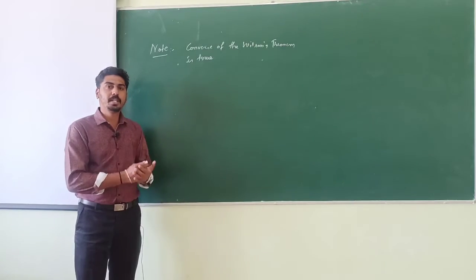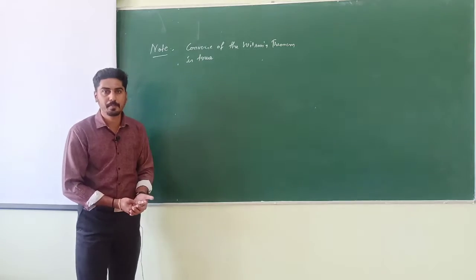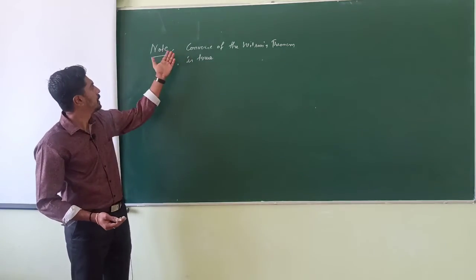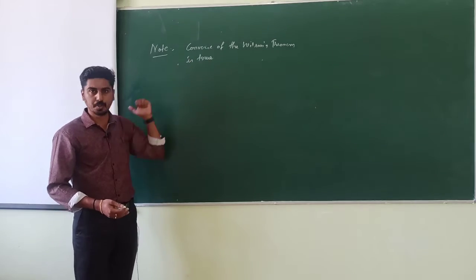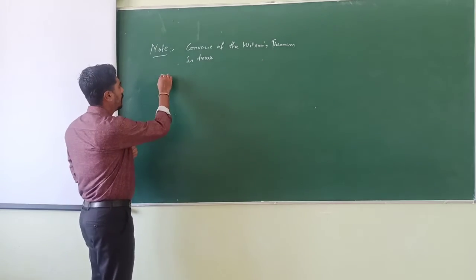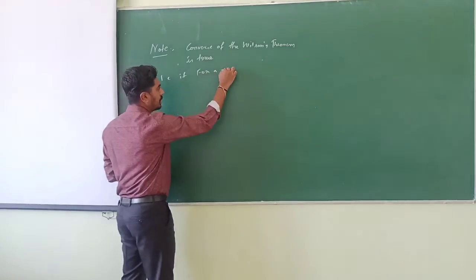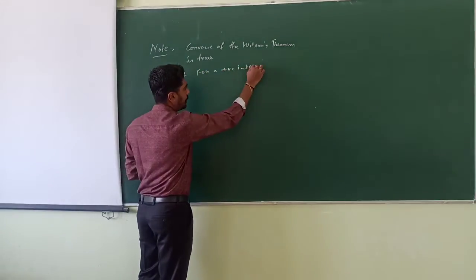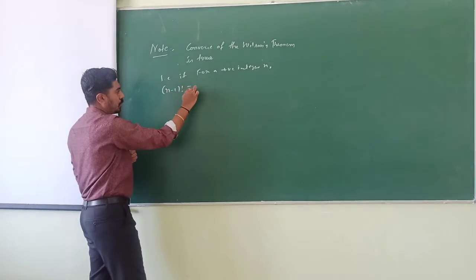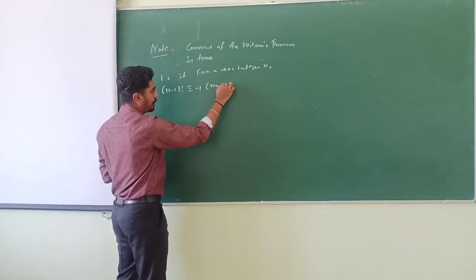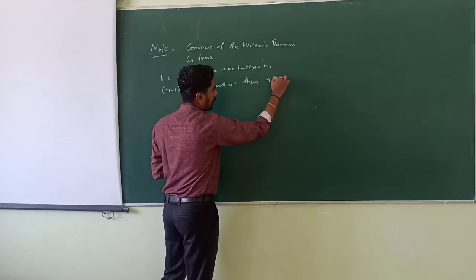As mentioned at the beginning, Wilson's theorem can be used as a primality test. The converse of Wilson's theorem is also true: if for a positive integer n, (n minus 1)! is congruent to minus 1 modulo n, then n is a prime number.